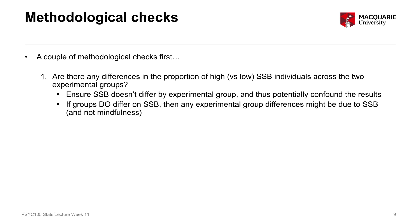To give you an example: if our groups did differ on somatic symptom burden and we found some differences in negative affect according to our mindfulness independent variable, those differences could be explained by the fact that they differ on somatic symptom burden — and not actually be due to the effect of mindfulness itself. So we need this methodological check to make sure our groups are even in terms of the breakdown of high versus low somatic symptom burden people across our two groups.